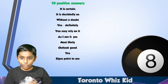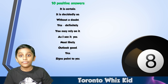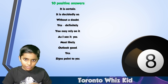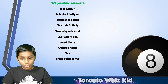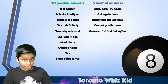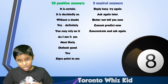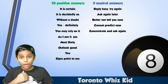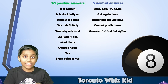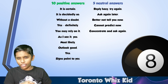Let's move on to what it has inside. It has 10 positive answers: 'It is certain,' 'It is decidedly so,' 'Without a doubt,' 'Yes definitely,' and a few more. Next it has 5 neutral answers: 'Reply hazy try again,' 'Ask again later,' 'Better not tell you now,' 'Cannot predict now,' and 'Concentrate and ask again' — as you saw when I tried before the intro.